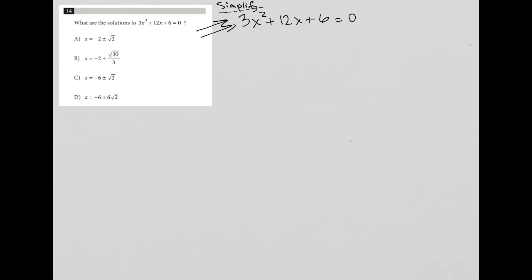The first rule of simplification is can you pull out a greatest common factor? There is one. In this case, the GCF is equal to 3. So when I pull 3 out, I end up with 3 parentheses x squared plus 4x plus 2 equals 0. Because this is an equation, I can divide both sides by 3 so that this 3 is gone and I'm left with x squared plus 4x plus 2 equals 0.